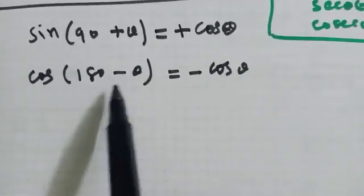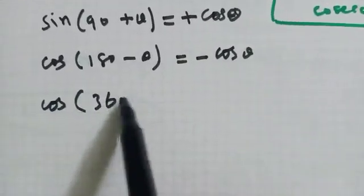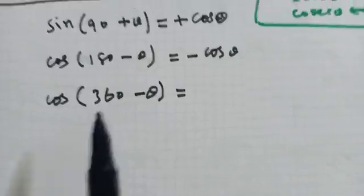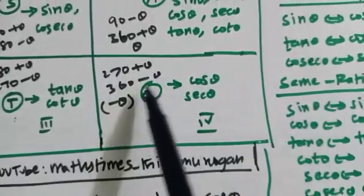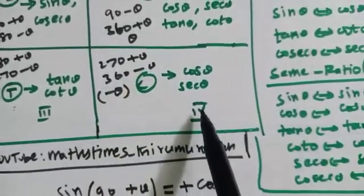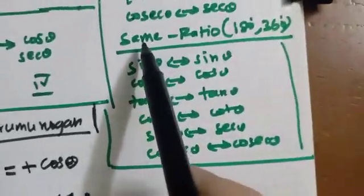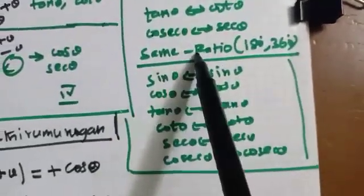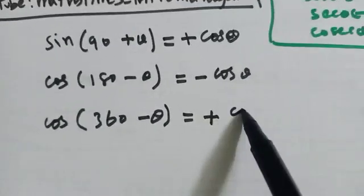cos(180 minus theta) is minus cos theta. This is the case of 360 minus theta. The case of 360 minus theta is the fourth quadrant. The fourth quadrant has cosine positive. 360 is the same ratio or core ratio, and the cos is the same ratio.